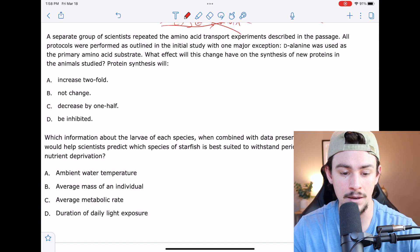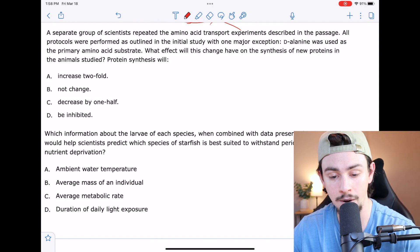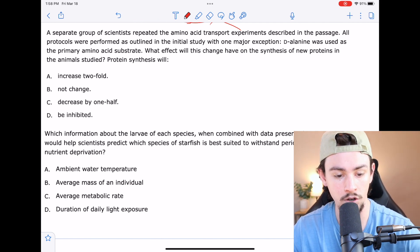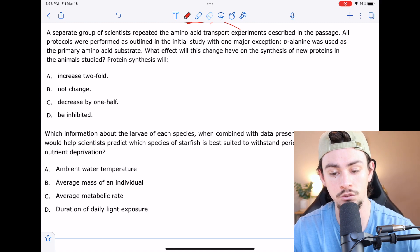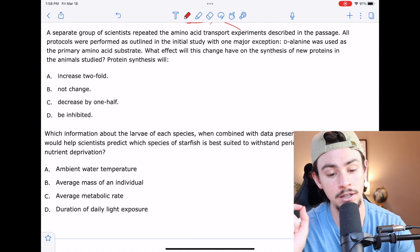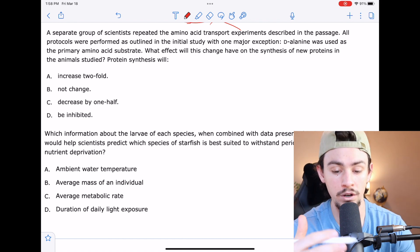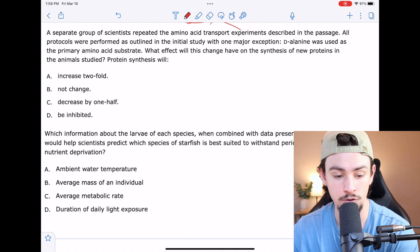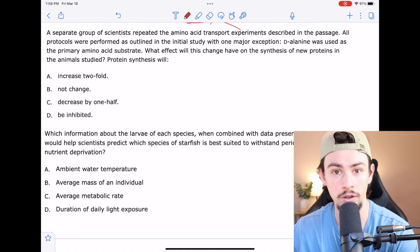Number 26 says a separate group of scientists repeated the amino acid transport experiments described in the passage. All protocols were performed as outlined in the individual study with one major exception. And that's that D-alanine was used as the primary amino acid substrate. What effect will this change have on the synthesis of new proteins in the animal studied? Protein synthesis will what?